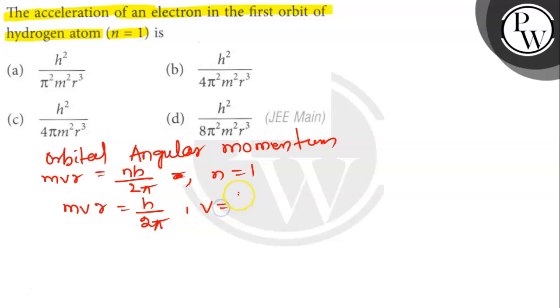So v equals h by 2πmr. Therefore, v squared equals h squared by 4π²m²r².